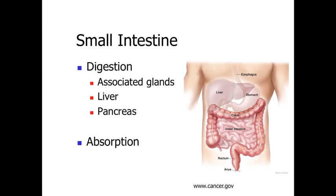Within the small intestine, we finalize digestion, breaking down food particles into individual monomers — individual amino acids, individual sugar units — and breaking lipids down from large globs into small lipids. All of that is occurring within the small intestine.